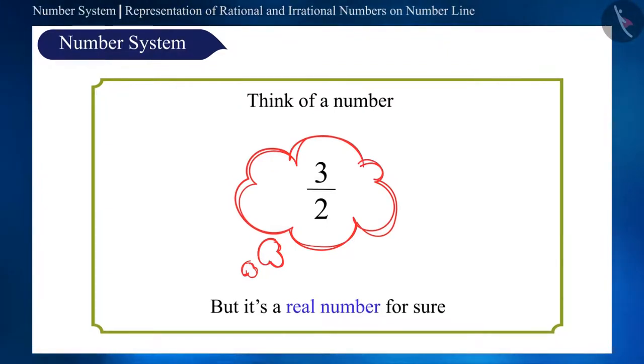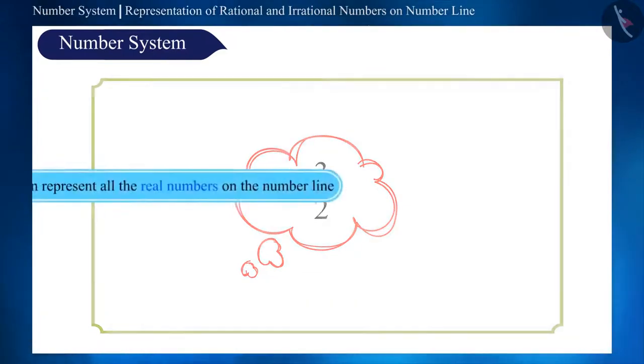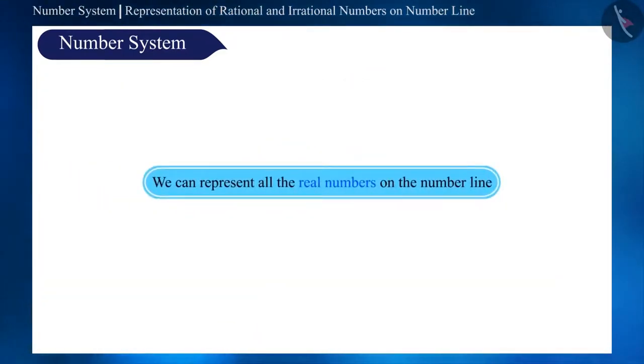This means that any random number that we can think of will always be a real number, and we can represent all the real numbers on the number line.